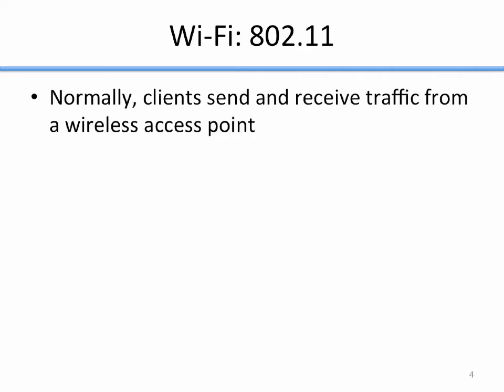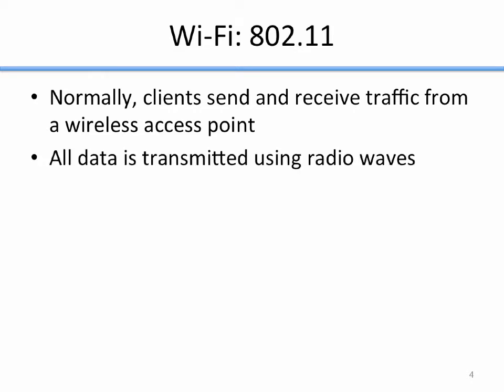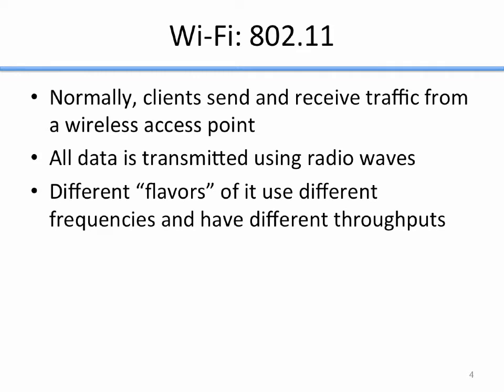Normally, clients send and receive traffic from a wireless access point. Ad hoc mode exists but is rarely used, so we won't talk about it much in this course. All data in Wi-Fi is transmitted using radio waves. I mention this because other wireless standards use other techniques — like laser — but radio waves is what we're talking about with 802.11.